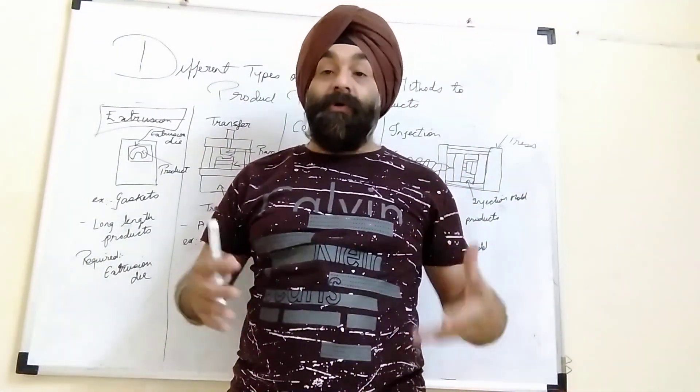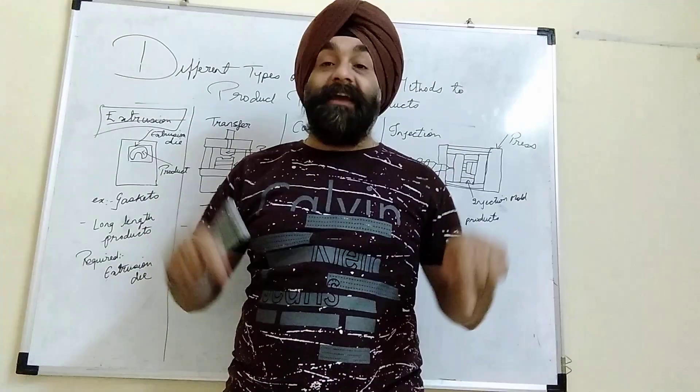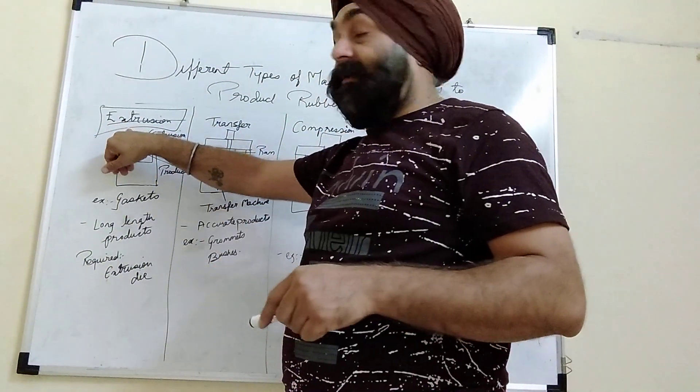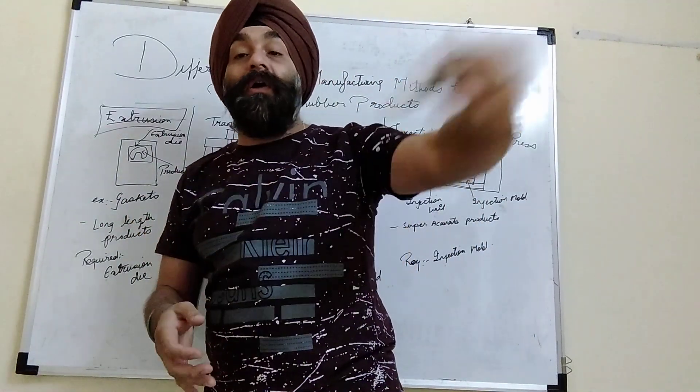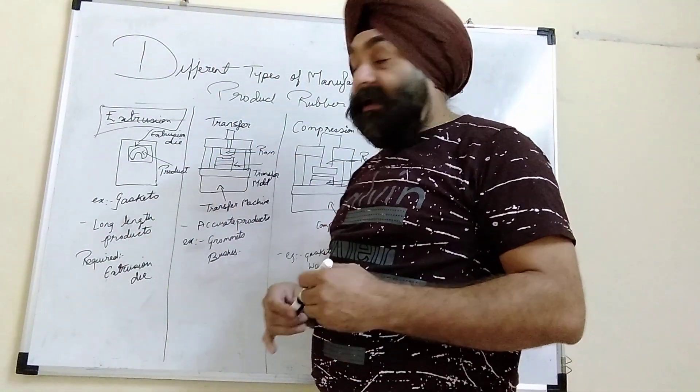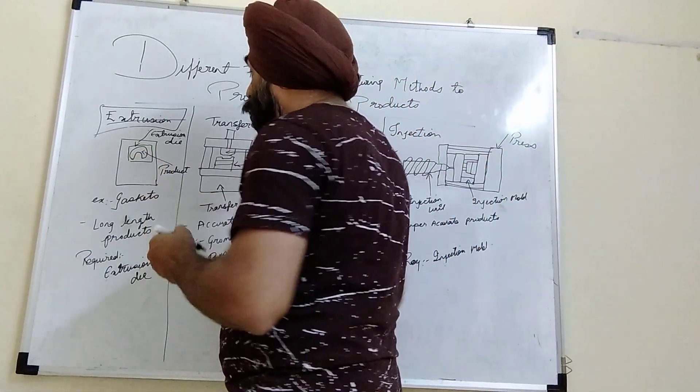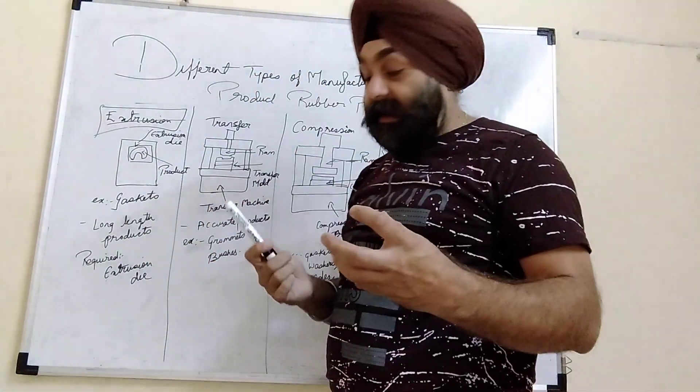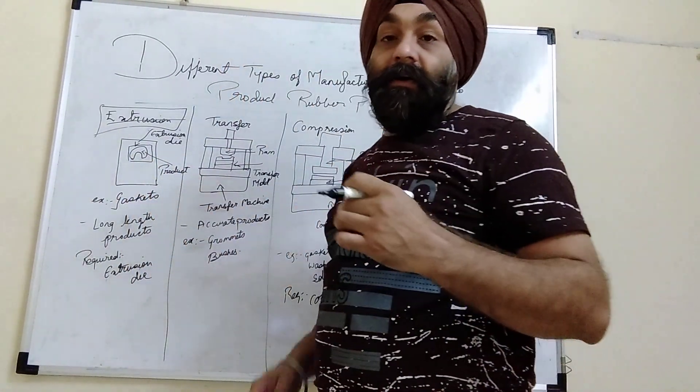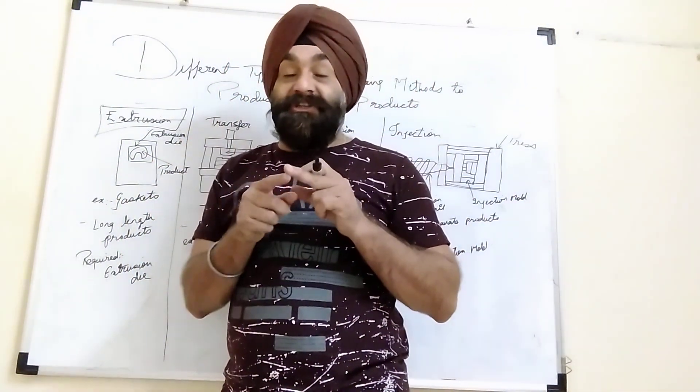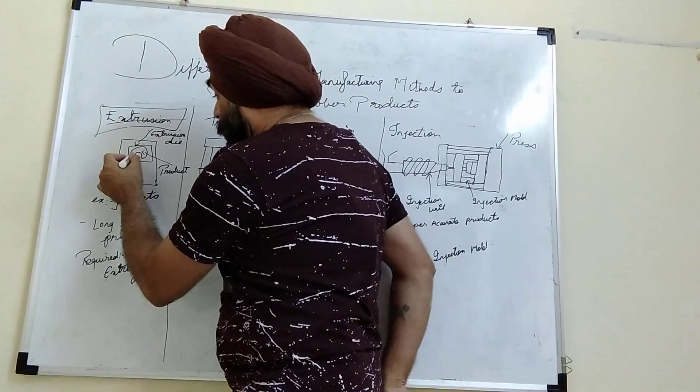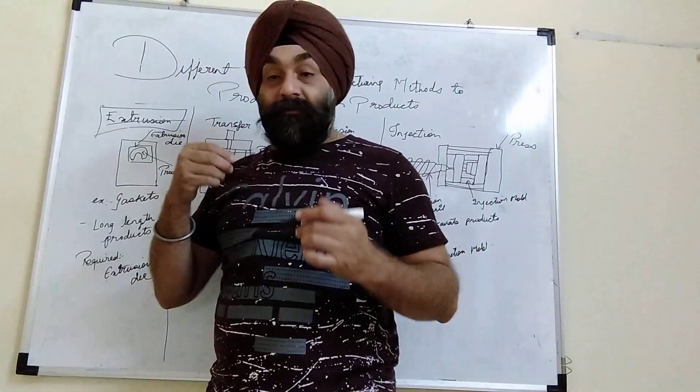Wherever you need a long length rubber in the same shape, there is an extrusion die in which there is an opening approximately equal to the shape of your gasket.